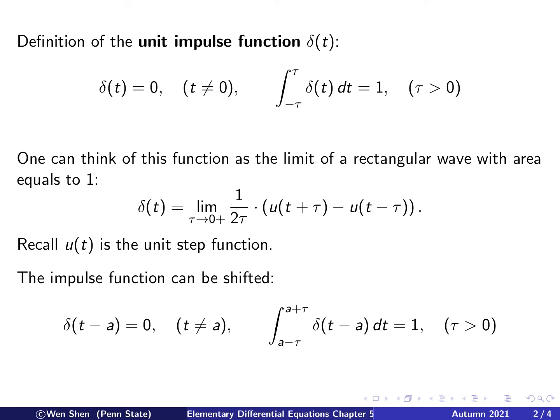One comment is that this impulse function can be shifted. We can consider the function delta of t minus a. Then this function equals 0 for all t different from a, and if you integrate on an interval around a of any small length, this integral equals 1 for any tau bigger than 0.